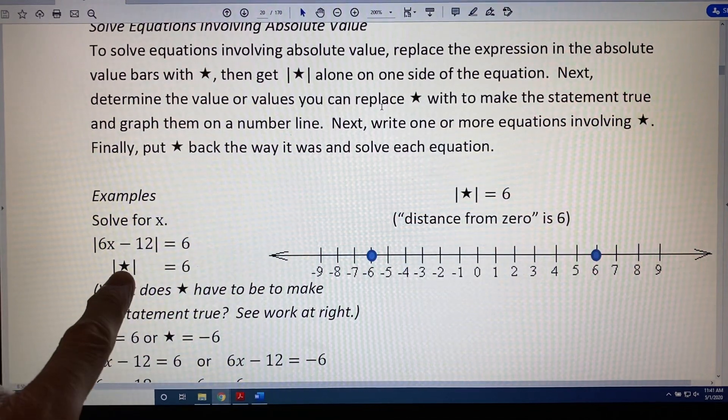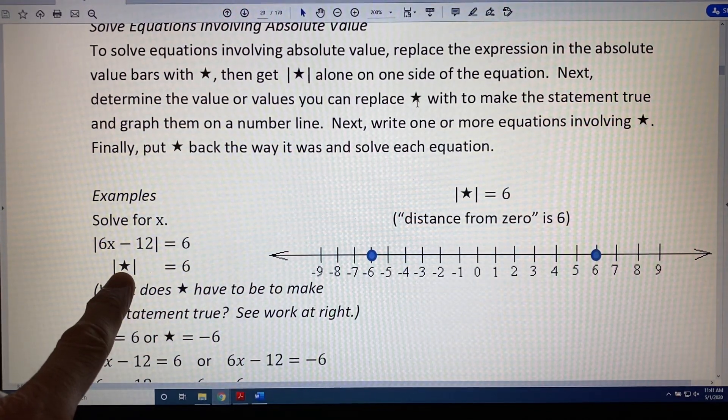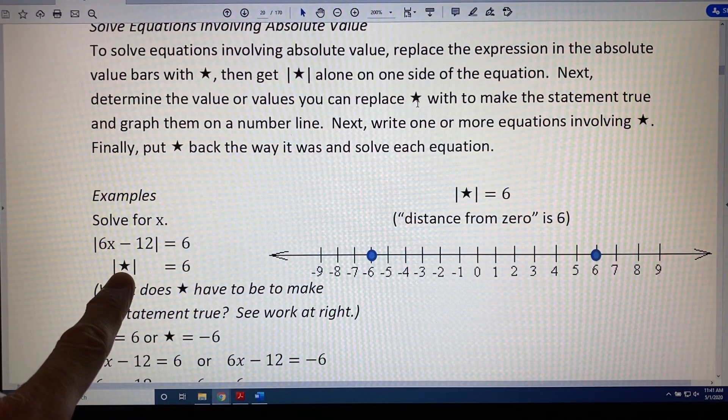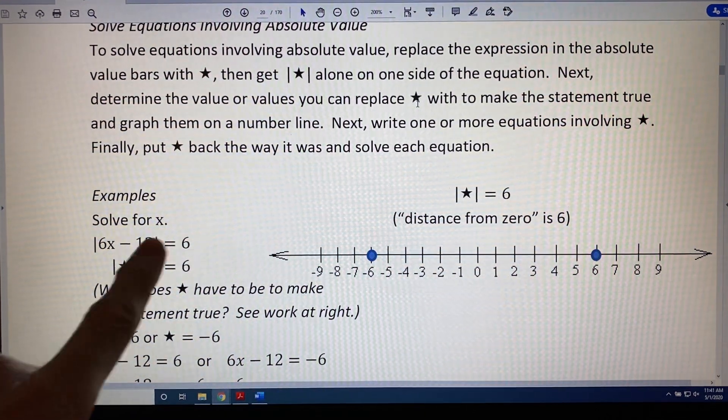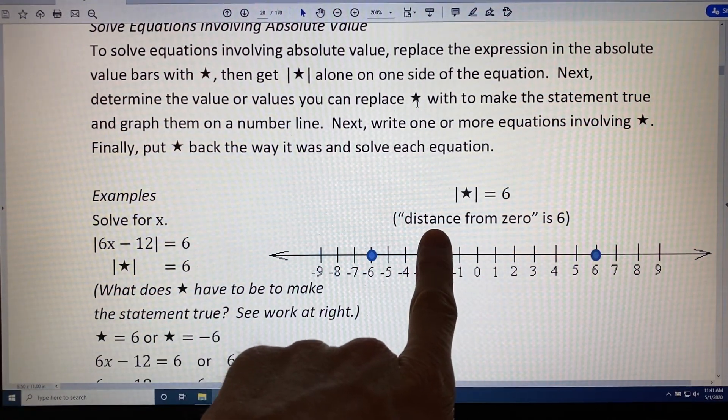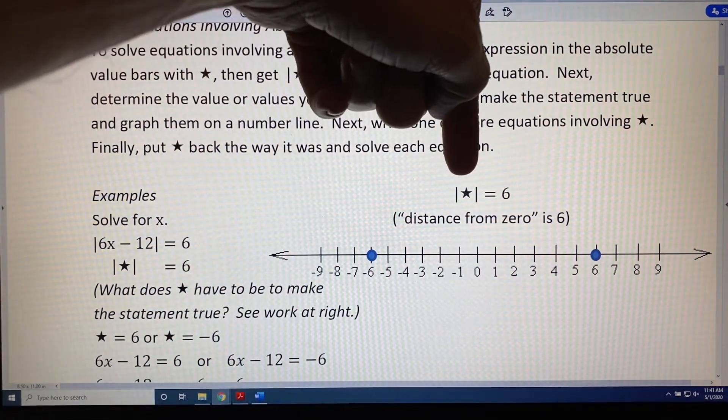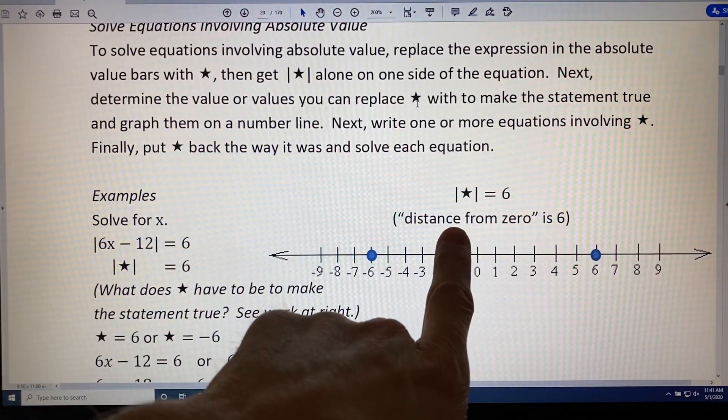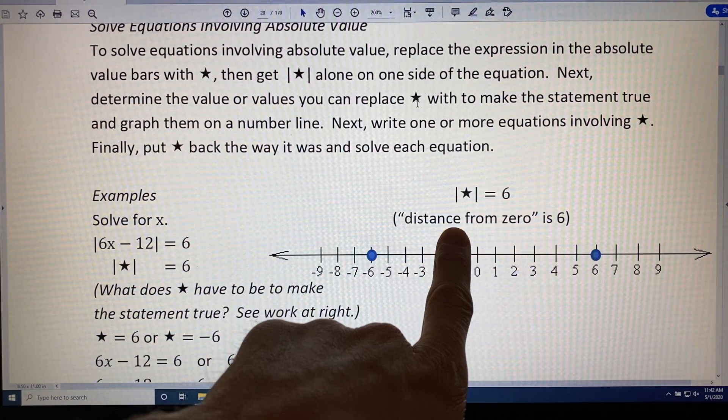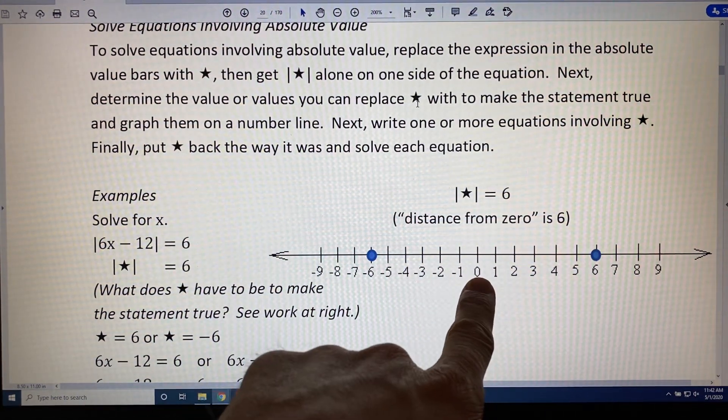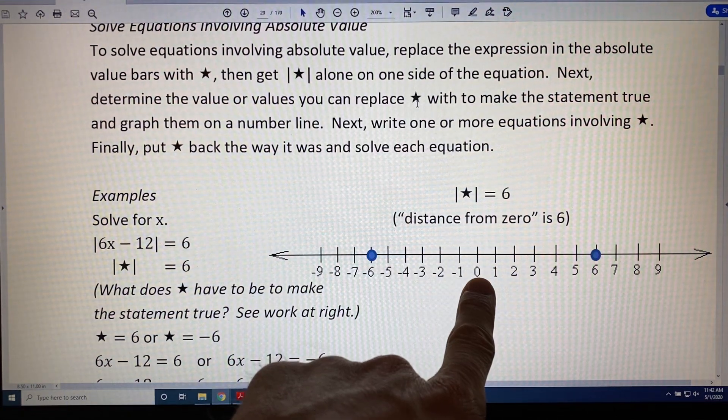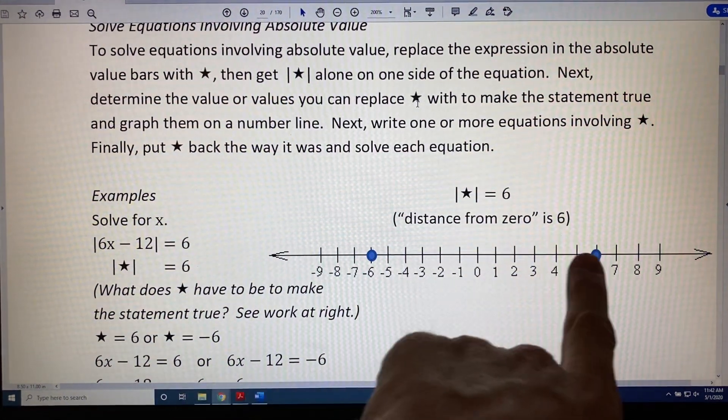Next, determine the value or values you can replace star with to make the statement true. Remember, the absolute value of star is kind of like the word phrase distance from 0. So when we say the absolute value of star equals 6, another way to think about that is saying the distance from 0 is 6. So if you start at 0 and you go 6 spaces to the left or right, where do you end up? 6 or negative 6.